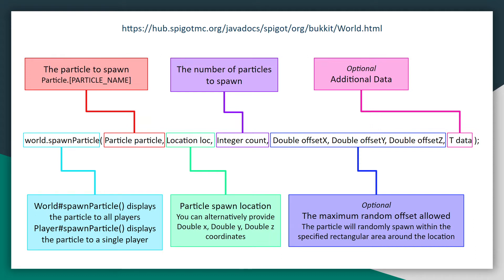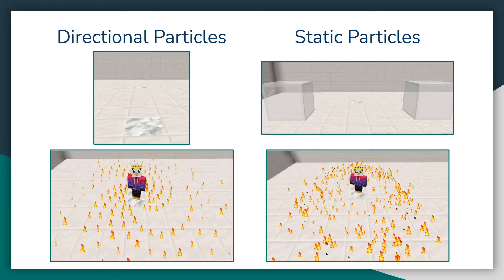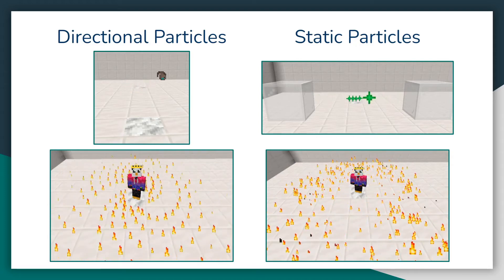On top of that you can also throw in some additional data parameters. For example, we have some colored particles later on where we'll have to pass in an additional object. But this is basically the gist of the particle spawning method call. I like to think of there being two different types of particles — I call them directional particles and static particles.